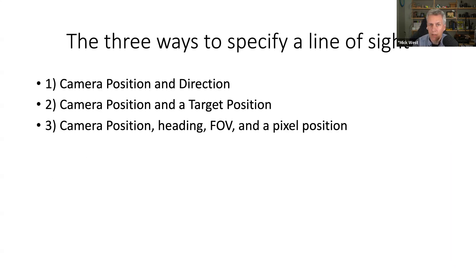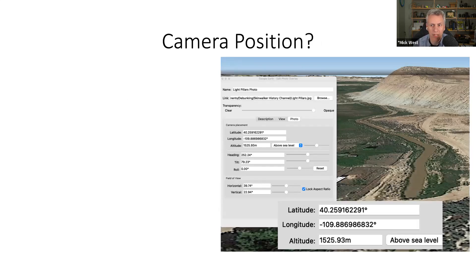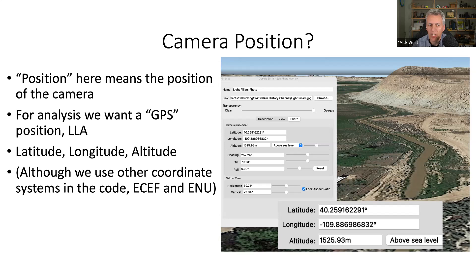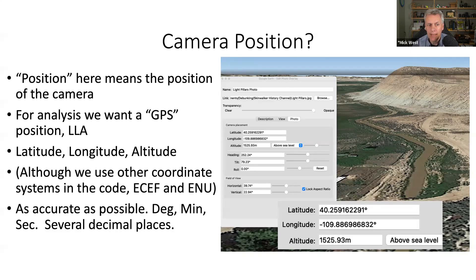There are three ways to specify a line of sight, and they all start with a camera position — the position of the camera in the world, its location on a map and its altitude. For analysis, we normally use GPS position: latitude, longitude, and altitude. We sometimes use other coordinate systems like ECEF (Earth-Centred, Earth-Fixed) and ENU (East-North-Up), but the starting point is latitude, longitude, and altitude. For good line-of-sight analysis, you want coordinates as accurate as possible — degrees, minutes, and seconds with several decimal places if possible.